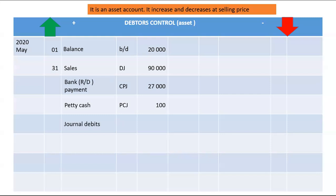The last transaction on the debit side will be general debits — the total of debits in the general journal under debtors control. Note that the total of the debits might be due to a debtor being charged interest or cancellation of discount on dishonored payments. All of those will be recorded in the general journal on the debit side of your debtors control, and that total will be recorded on the debit side of your debtors control account.